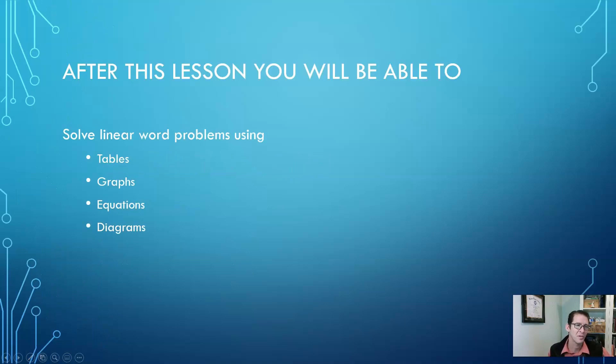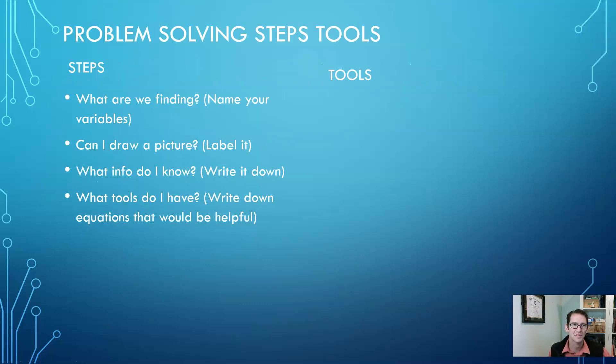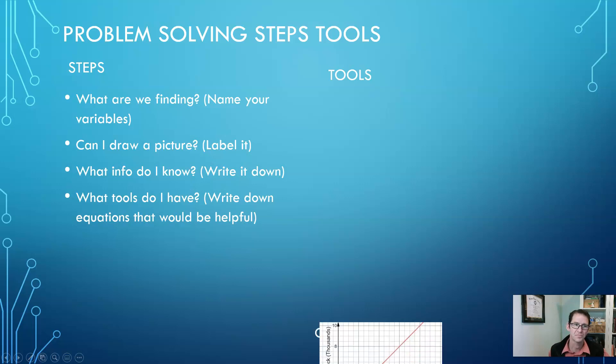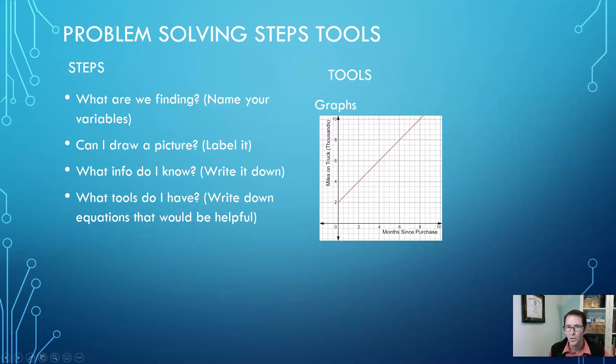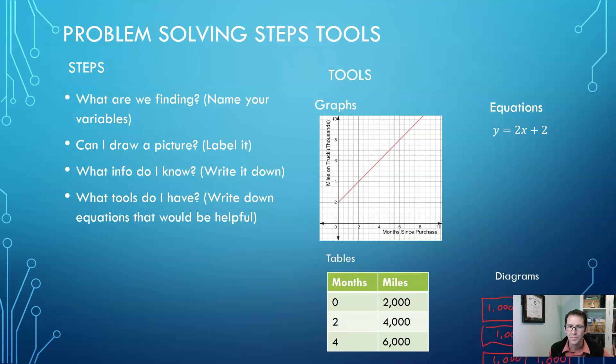So we're going to be using tables, graphs, equations, and diagrams. Let's review. When you approach a problem-solving situation, you're going to ask yourselves what are we finding, think about ways you can represent it with a picture, look for information you know and what you don't know, and we're going to ask ourselves what tools do I have. For example, one tool would be a graph, you also have equations, and then you have tables and diagrams. With that in mind, let's use some of these tools strategically to do some problem solving.